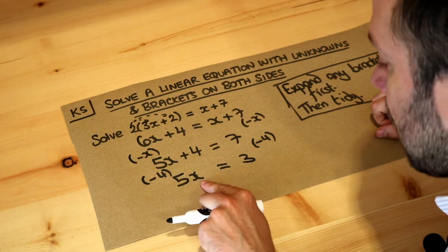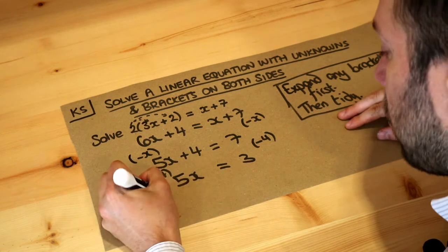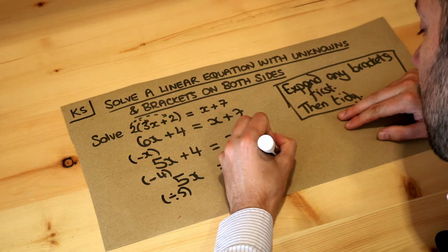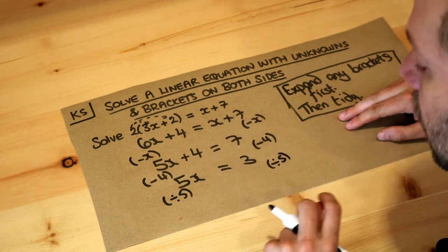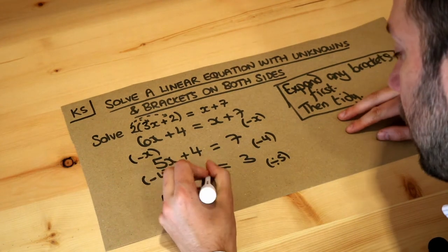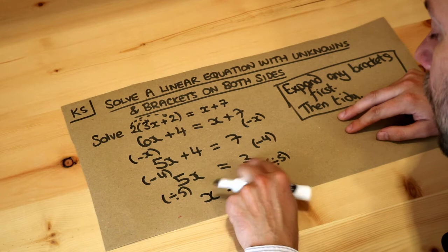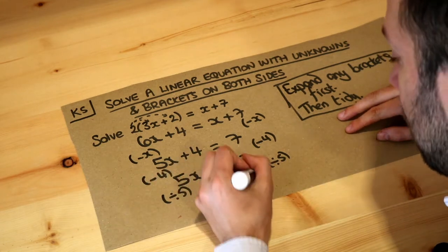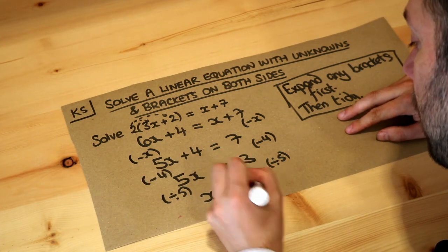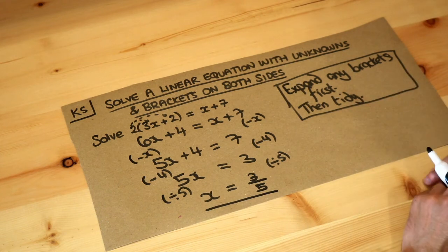What was the last thing done to x? It was multiplied by 5. We do the opposite by dividing by 5. Dividing by 5 gets rid of the 5, leaving just x, and 3 divided by 5 is 3 fifths, or 0.6 if you prefer — and that is the final answer.